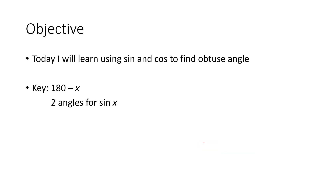Take out your notebook and write this down. Today I will learn using sine and cosine to find an obtuse angle, and the key is 180 minus x. There are actually two angles for sine x — that means sine x can actually have two possible answers, unlike what we learned in the previous video where you were only concerned about acute angles.